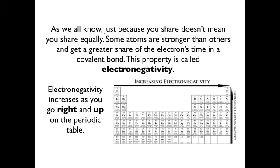Here's an important concept. I've got a sister about five years younger than me. When we were kids, mom would sometimes get us a toy to share. I'm five years older and bigger — do you think we shared equally? No, I got the toy most of the time. With atoms, it's not really all that different. Atoms don't always share equally. Some atoms are stronger than others. This strength — this ability to grab electrons and have them spend more time with you — is called electronegativity, and this is an important concept you need to grasp.